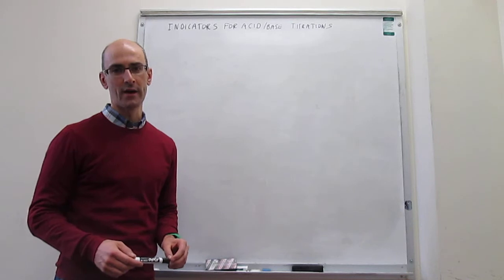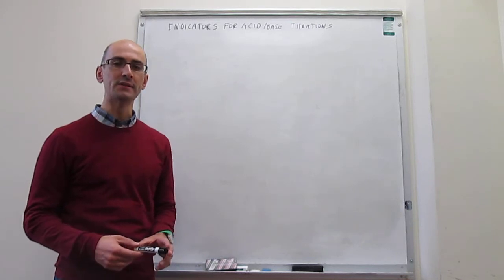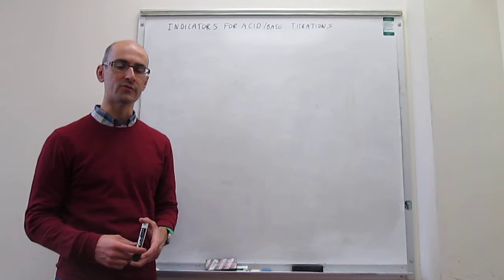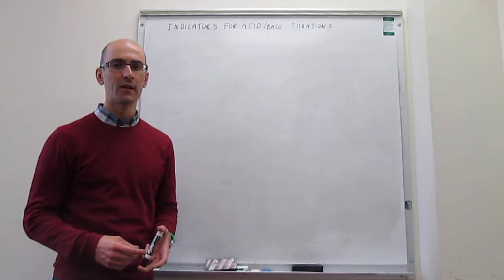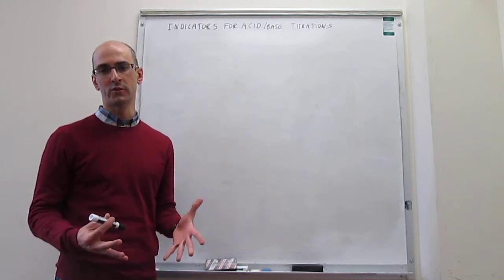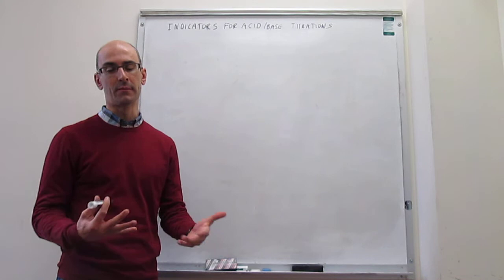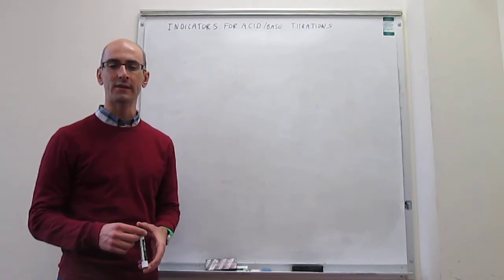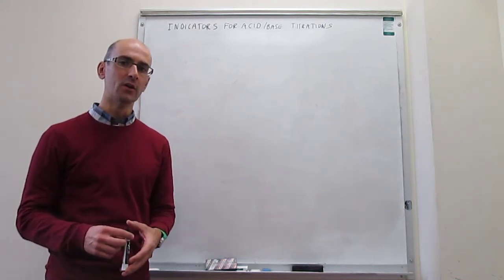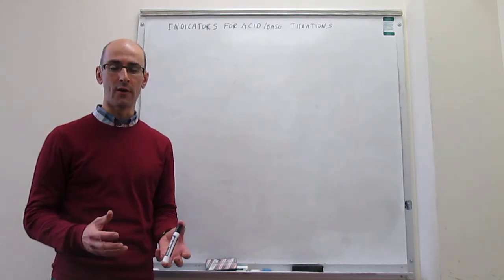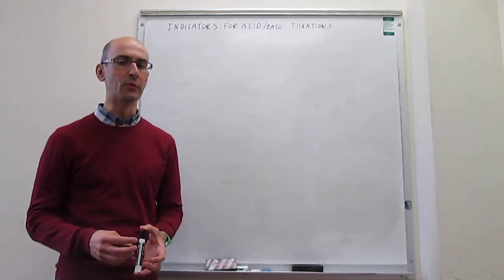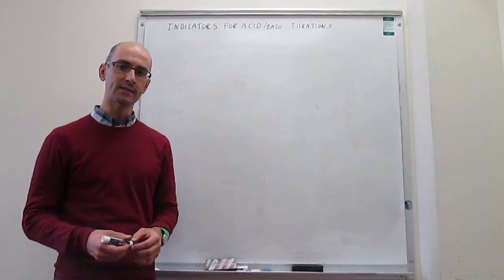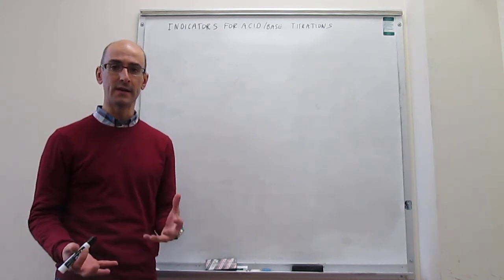In this video, we describe, at a superficial level, how indicators for acid-base reactions work. The idea is that when you have a titration of an acid and a base, you would like to have an indicator that changes color whenever you're getting around the equivalence point. Indicators are actually acids and bases themselves.